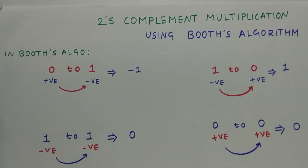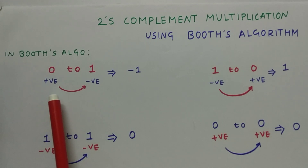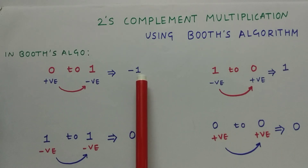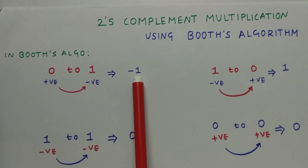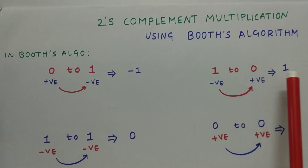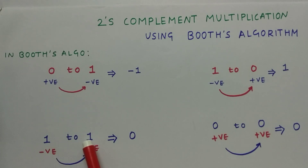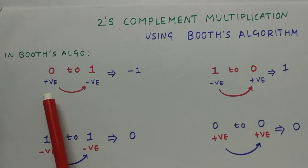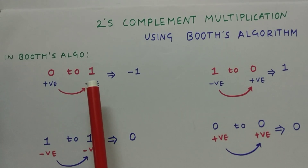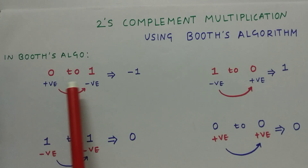To perform the multiplication in Booth's algorithm, you must convert a binary number into Booth's algorithm form. For that you must know the following things: when we move from LSB to MSB, moving from 0 to 1 is represented as -1 in Booth's algorithm; 1 to 0 is represented as 1; 1 to 1 is 0; and 0 to 0 is 0. Here, 0 is positive, and 1 is negative when it is at the MSB.